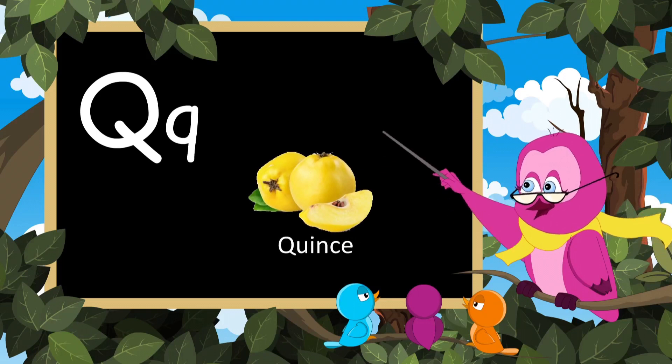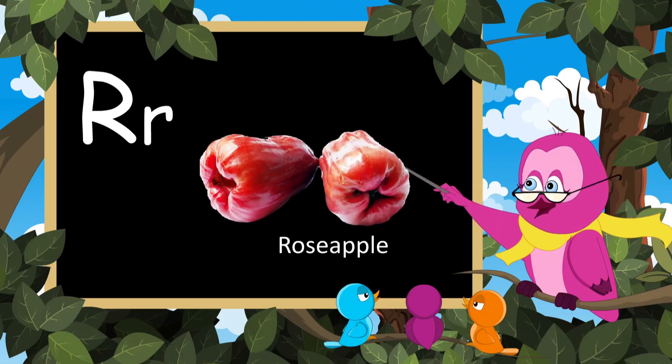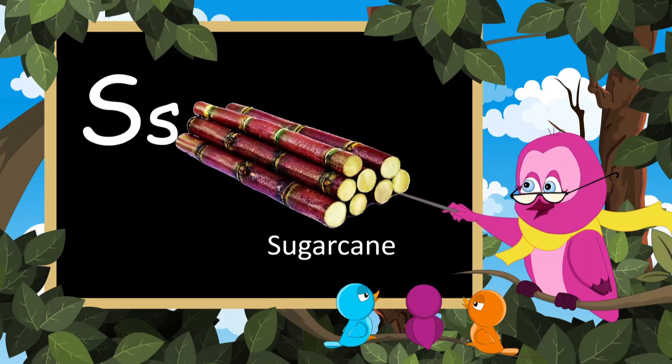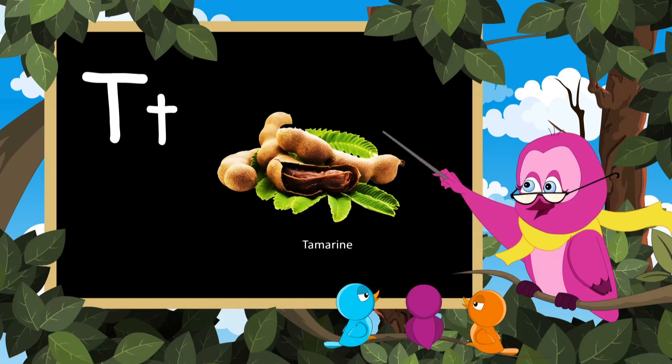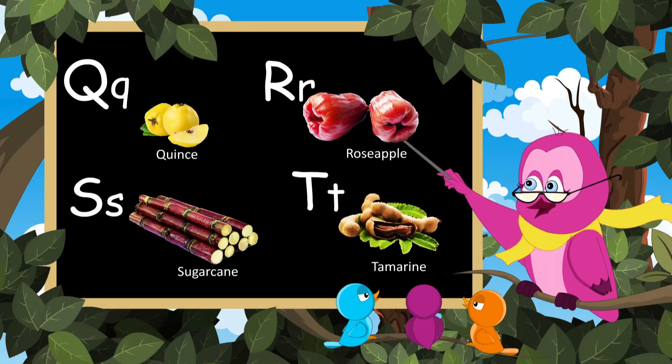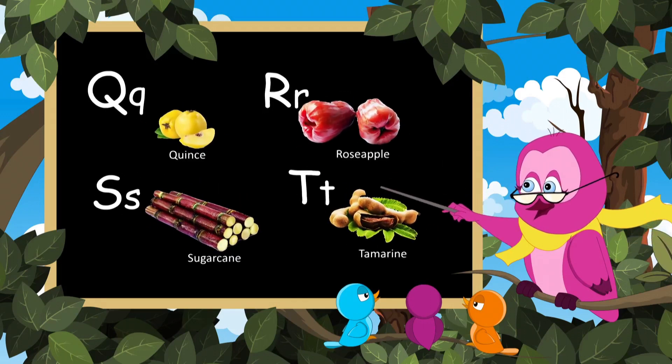Q for quince, R for rose apple, S for sugarcane, T for tamarind. These are all for fruits, sing with me.